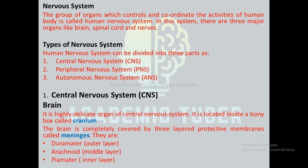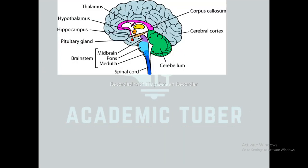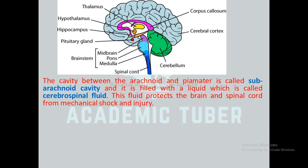The brain is completely covered by three protective membrane layers called the meninges: the dura mater, which is the outermost layer; the arachnoid, which is the middle layer; and the pia mater, which is the innermost layer. The cavity between the arachnoid and the pia mater is called the subarachnoid cavity, filled with cerebrospinal fluid, which protects the brain and spinal cord from mechanical shock and injury.